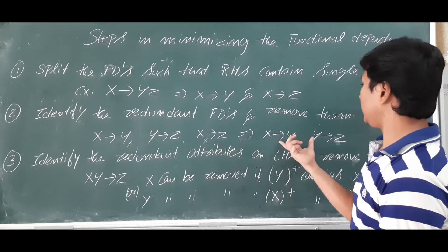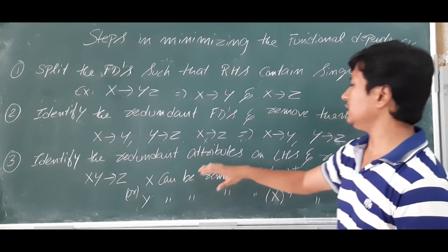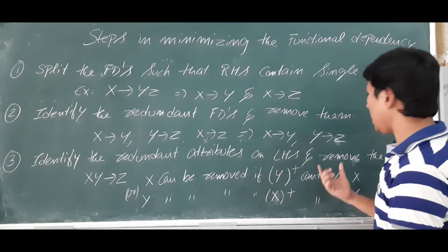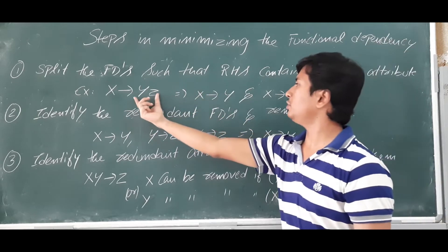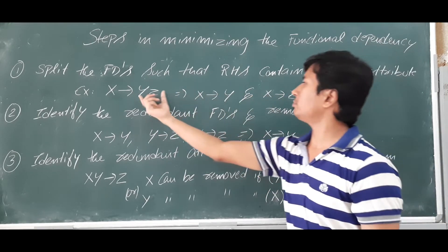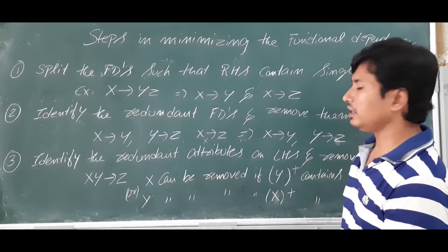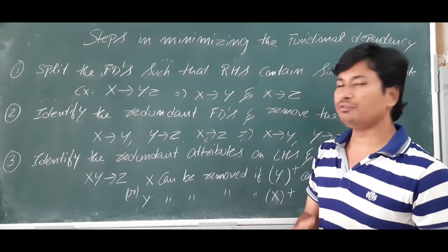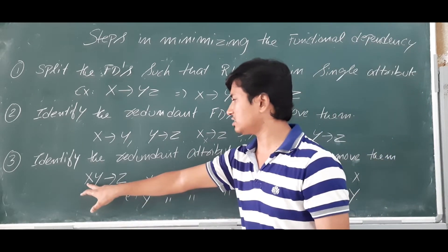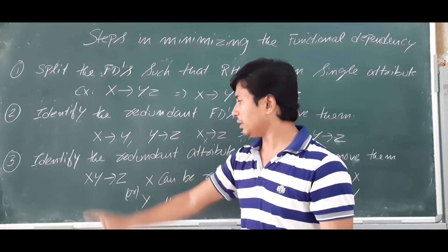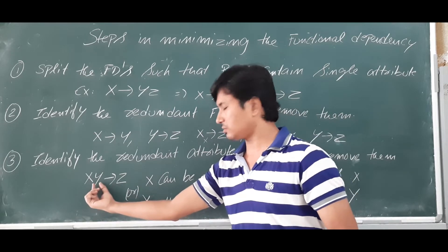I have removed X determines Z since it is redundant. The third step is to identify the redundant attributes on the left hand side and remove them. We have split the right hand side attributes; now we check if we can reduce the attributes on the left hand side. For example, if XY determines Z, the left hand side consists of more than one attribute.